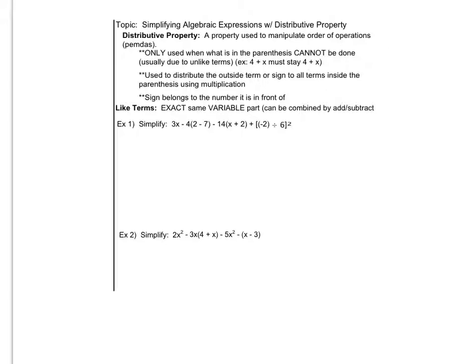Remember, like terms mean you have the exact same variable part. So x and 3x would be like terms. x squared and x squared would be like terms. 5x and 5x squared would not be like terms.